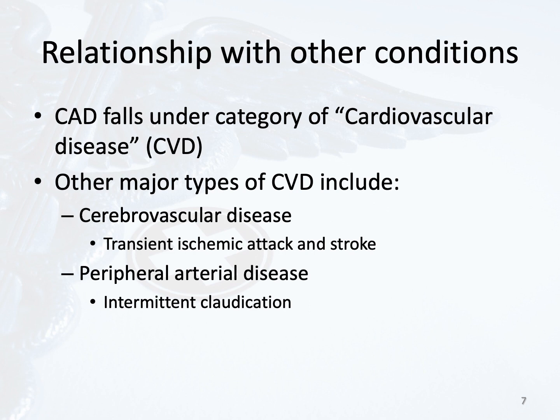Coronary artery disease falls under the category of cardiovascular disease. Other types include cerebrovascular disease, which can be manifested by a transient ischemic attack — which is temporary — versus a stroke, which is permanent brain damage, as well as peripheral arterial disease, which has the temporary symptom of intermittent claudication or leg pain with exertion. The common pathology linking all of these is atherosclerosis — plaque buildup in the arteries — and it is important to consider that patients likely have atherosclerosis throughout their arteries, not in just one organ or tissue.